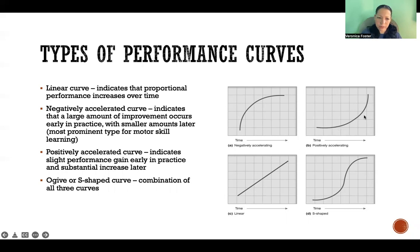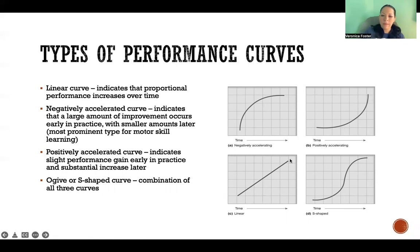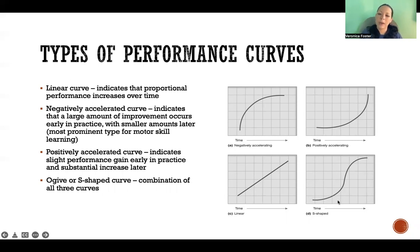A positively accelerated curve is kind of the opposite, where we have a slower performance gain in the beginning and then a steeper increase later on. And then the last one, in the bottom right, is an S-shaped curve that's a combination of all the other three types.